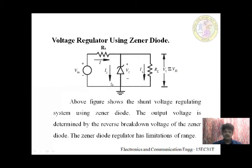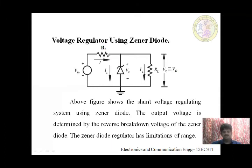Having an idea of the Zener diode, we can understand the voltage regulator using the Zener diode. This is the circuit of voltage regulation using the Zener diode. We have input voltage V_in, a current limiting resistor R_S in series, a Zener diode connected in the reverse breakdown region, and load R_L. The function of R_S is to limit the excessive current. This is called a shunt voltage regulating system because the Zener diode is connected in parallel to the load.